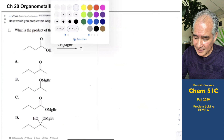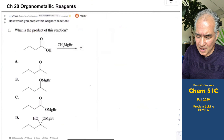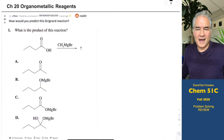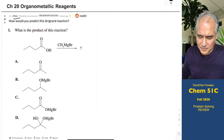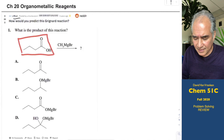Here's another question — this came out of Reddit. Somebody posted a question about one of these MCAT study exams asking: what is the product of this reaction? The question asks: if you have a carboxylic acid and you treat it with a Grignard reagent, what do you expect to happen?